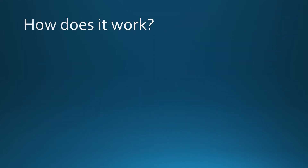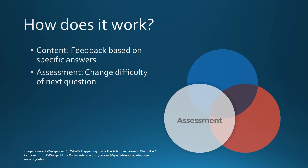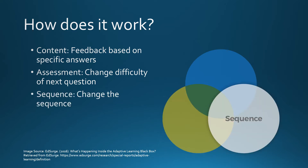There are three ways in which adaptive learning tools adapt or respond to learners in real time. Based on a learner's specific answers, tools with adaptive content respond with hints, feedback, or other resources related to that area of content. Tools with adaptive assessment change the difficulty level of questions based on responses to previous questions. Tools using adaptive sequence collect real-time data and analysis to change the sequence of what the learner sees next.